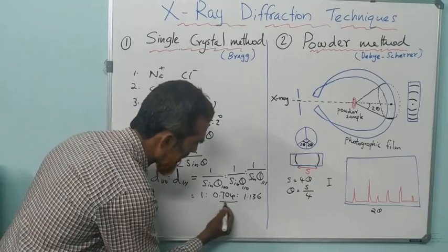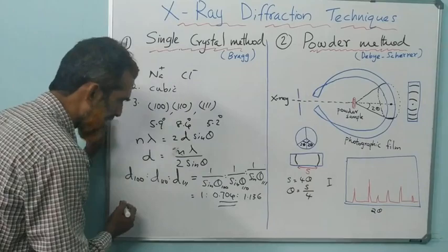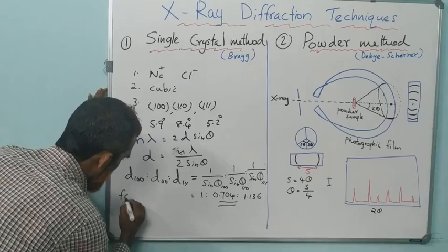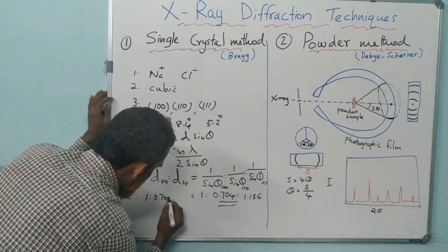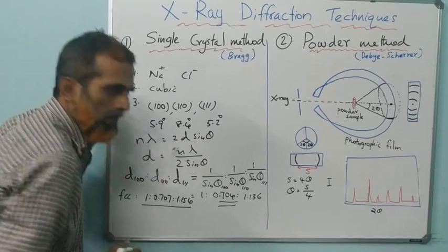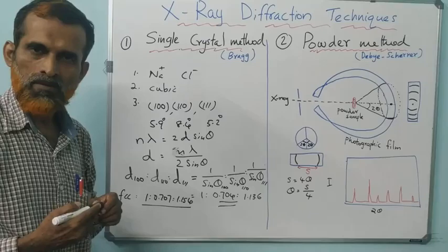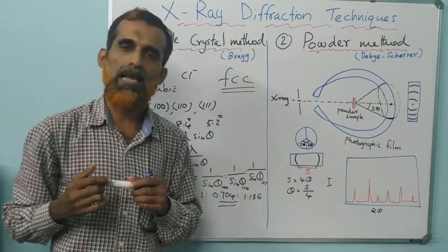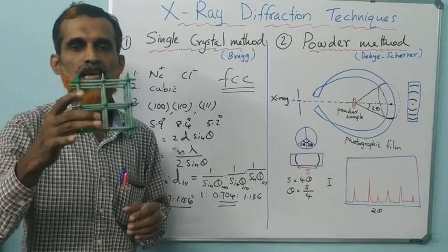You compare this experimental ratio with standard values. We have already discussed the interplanar distance ratios for different cubic Bravais lattices. This value — 1 : 0.704 : 1.136 — is close to that of FCC, whose standard value is 1 : 0.707 : 1.154. You can see this is close to FCC, not BCC or simple cubic. So we can say that sodium chloride has an FCC cubic lattice — face-centered cubic lattice. That is how we arrive at the structure of NaCl: NaCl is FCC type.